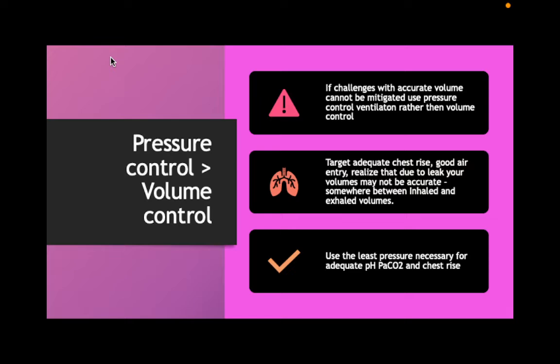Pressure control for neonates can be better than volume control because it allows us to manage these risks a little bit better. If you have air leaking and you've told the machine the baby is 2 kilos and you want to give 10 mils, and 5 mils are escaping — if 10 mils left the machine, it says it did its job. In pressure control, if air is escaping and we're not reaching our pressure, the machine keeps trying and keeps pushing more and more until we reach that pressure. So if you have a leak, pressure control sometimes works better.